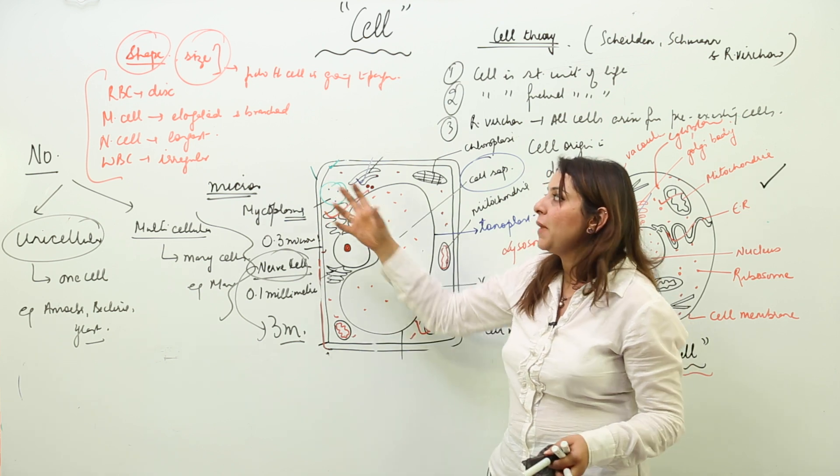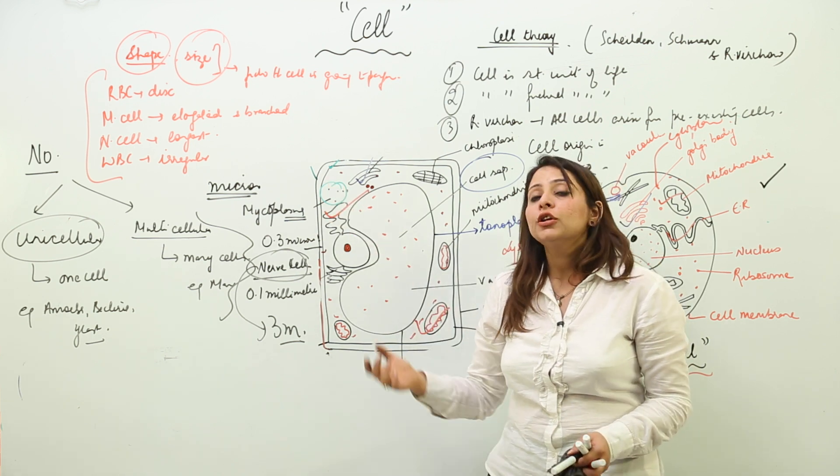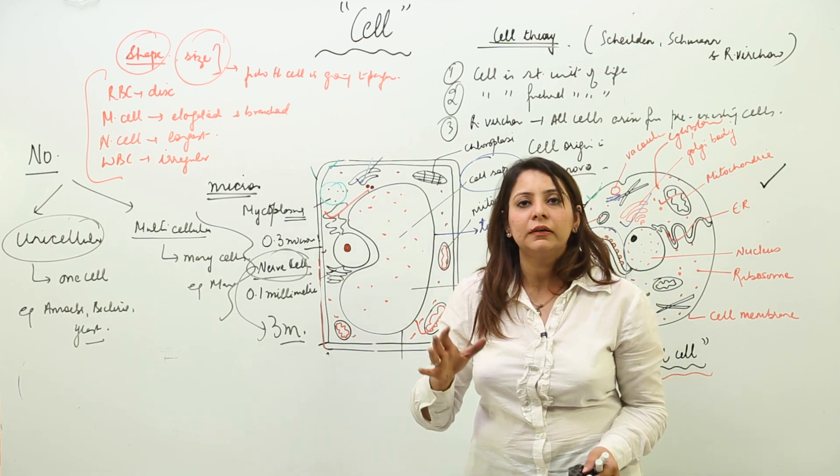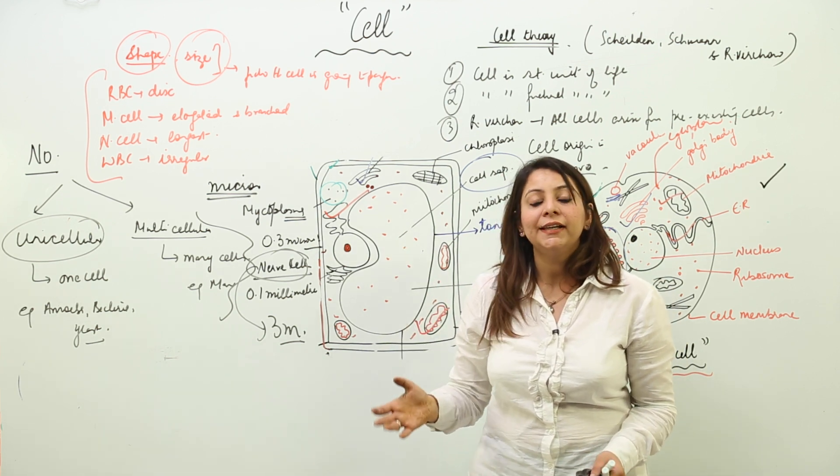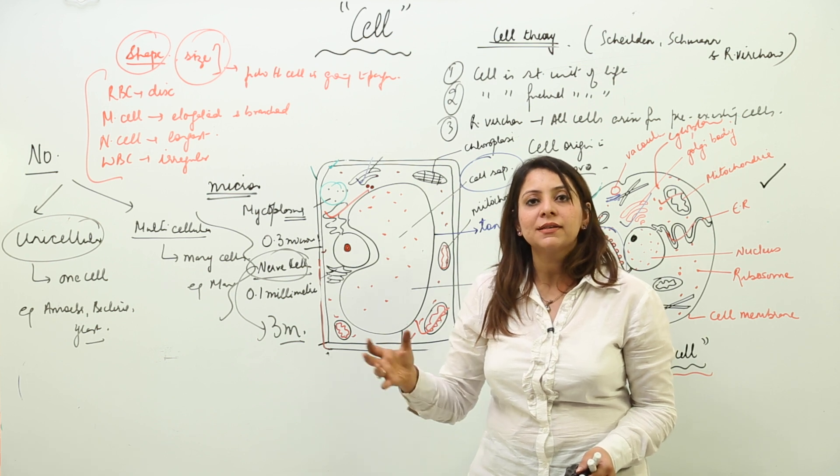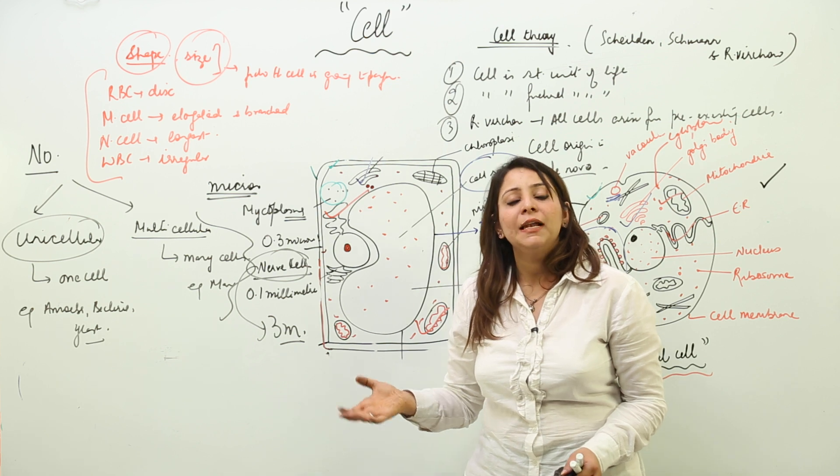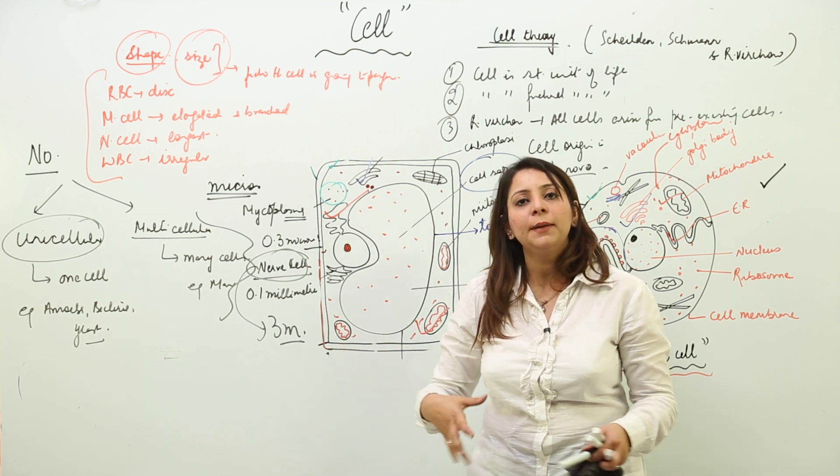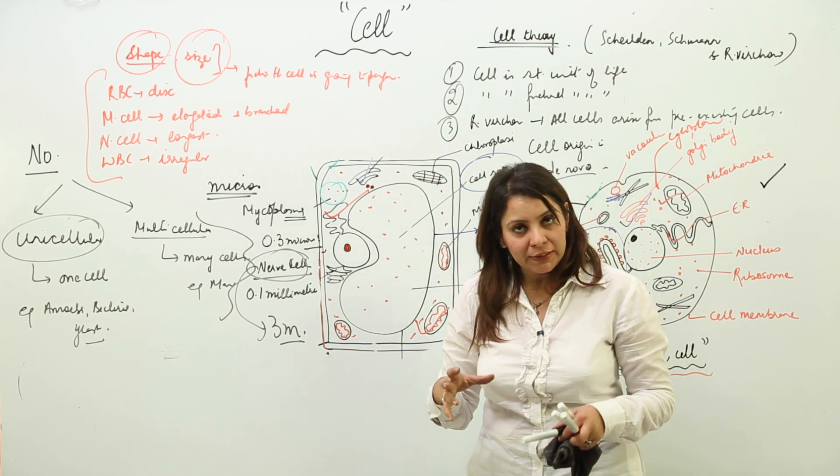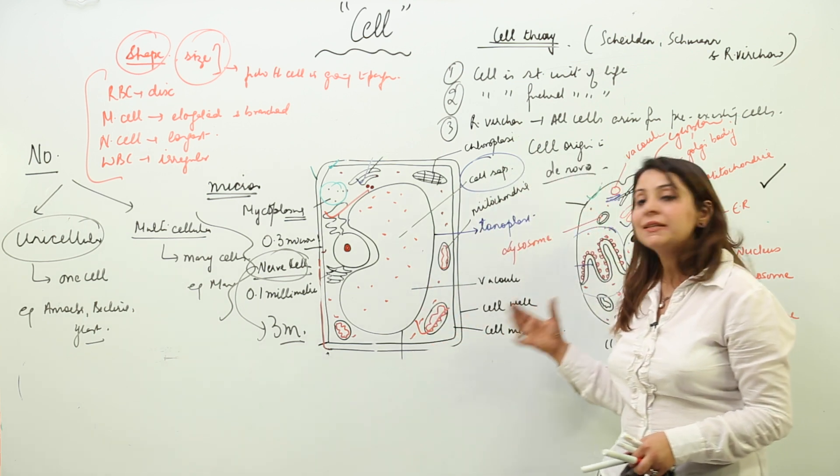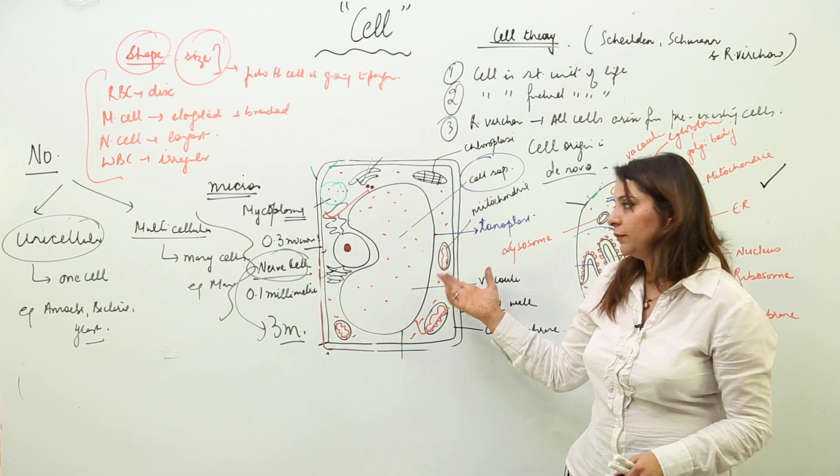We have the largest cell, that is the ostrich egg. So depending upon the requirement, the number, the shape, and the size varies in the cell. Now as you are familiar with the basic concept of the cell, we are going to start with the components of the cell, the cytoplasm. You must be familiar with the terms protoplasm, cell membrane, cell wall.